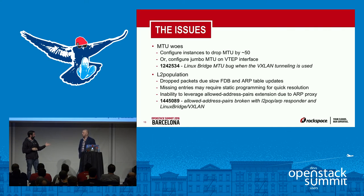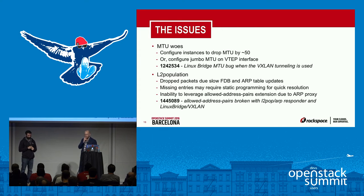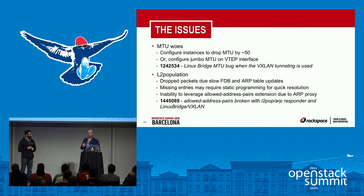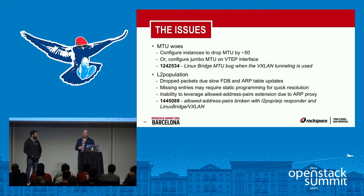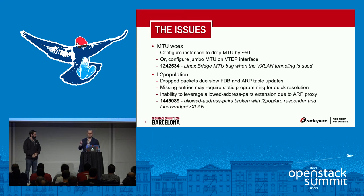One of the other dependencies of using VXLan or overlay technology is the need for some mechanism to program the forwarding tables on all the hosts involved. For the community there were two options. Our default option was to use the L2 population mechanism driver to allow Neutron to program all of that dynamically across the hosts. What we found, especially in the early days — Ice House was the first release where the L2 pop driver was available — even up through Liberty we experienced issues as the cloud scaled in terms of networks and ports.